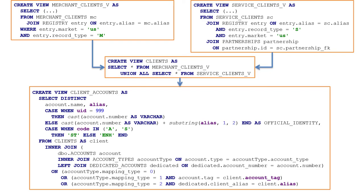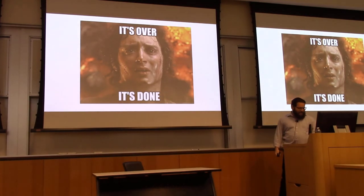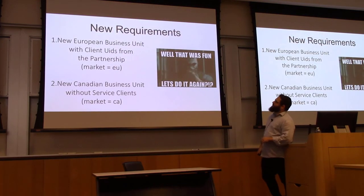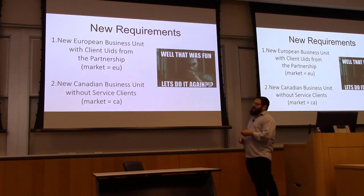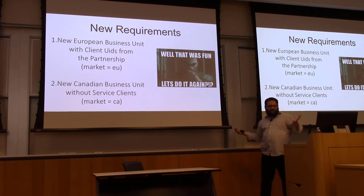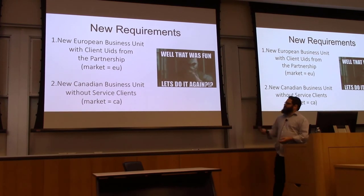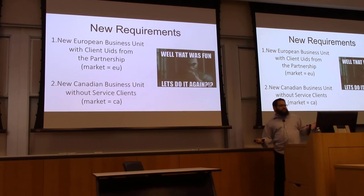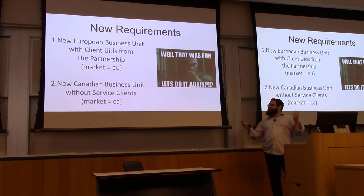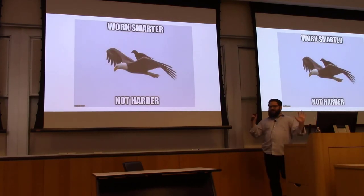We understand what's going on—wonderful, we've solved the problem. And then this happens: new requirements. Suddenly we have new businesses that we've acquired, and we have a whole new different schema because of course they work differently. We have a new kind of business that needs to propagate UIDs differently, and we need to join another table that has a different market. Then we have another simpler business unit that only has one kind of table that needs to go through that union.